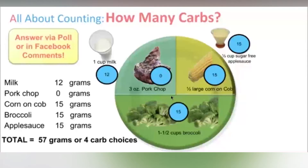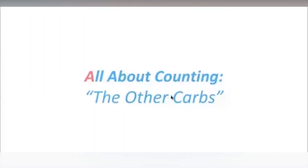So this is important — counting carbs versus grams of carb is one of those key take-home points. Now let's move on. There are many other things that affect sugars; our body converts one thing into another all the time. Next I want to talk about other things that are not carbs but are in that category.